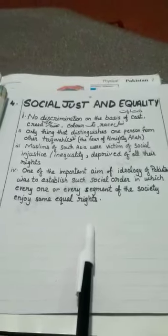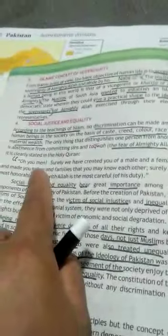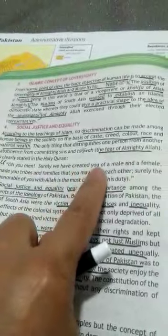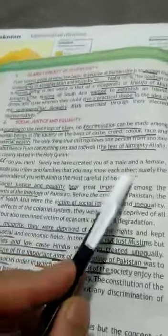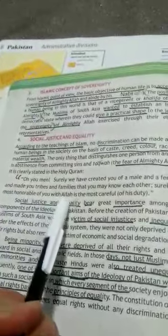The next two components will be discussed in the next lecture. For more clarity, read the topic from book pages three or four. There is a Quranic saying: 'O you men, surely We have created you of a male and a female, and made you tribes and families that you may know each other.'